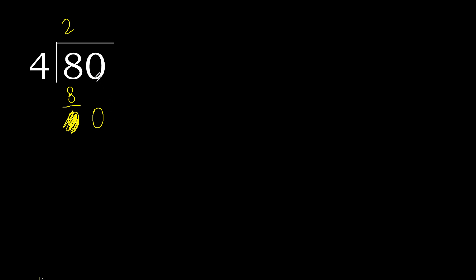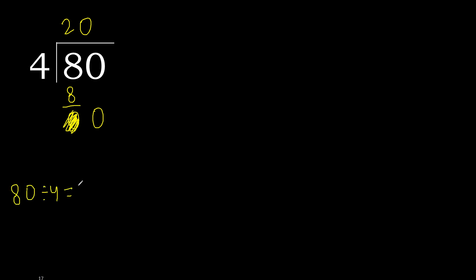That is not a number, therefore finish it. Complete with 0, because here we finish it with this 0. Therefore complete. 80 divided by 4 is 20.